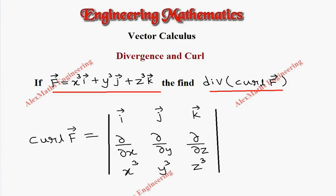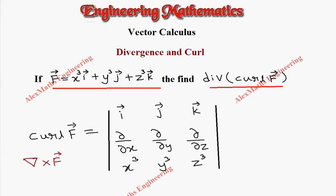Because this curl F vector is nothing but the cross product between del and F vector. So we are using the concept of the cross product, which we evaluate using the determinant mode.